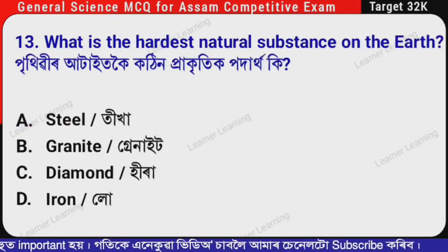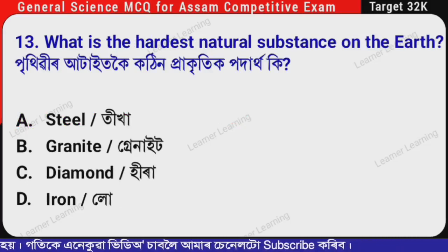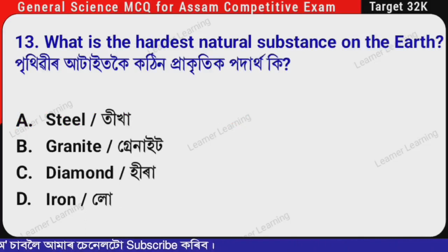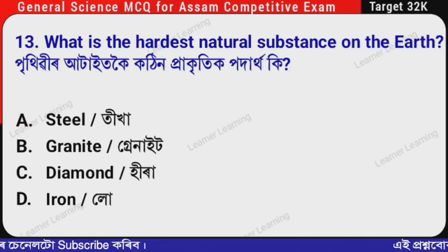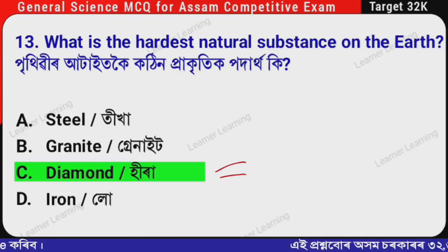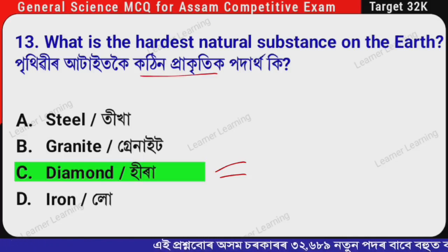Next question: What is the hardest natural substance on Earth? (Assamese: Pithivir attack kooyi kothin praakitik podar tha ki?) The correct option is Option C — Diamond. Diamond is the hardest natural substance on Earth.